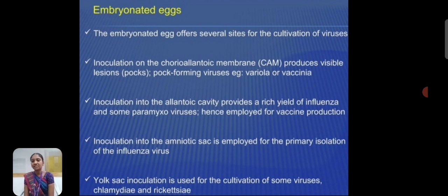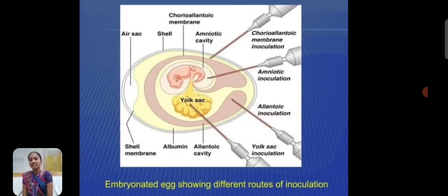The yolk sac is used for the cultivation of some viruses and also vaccine production. This is represented for embryonated egg culture and inoculation.